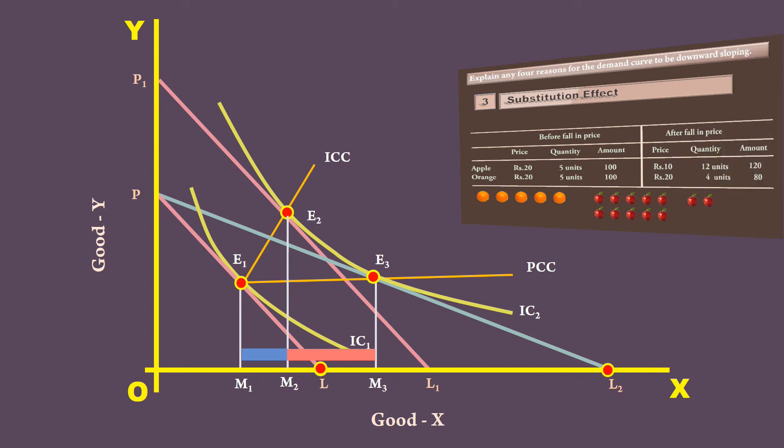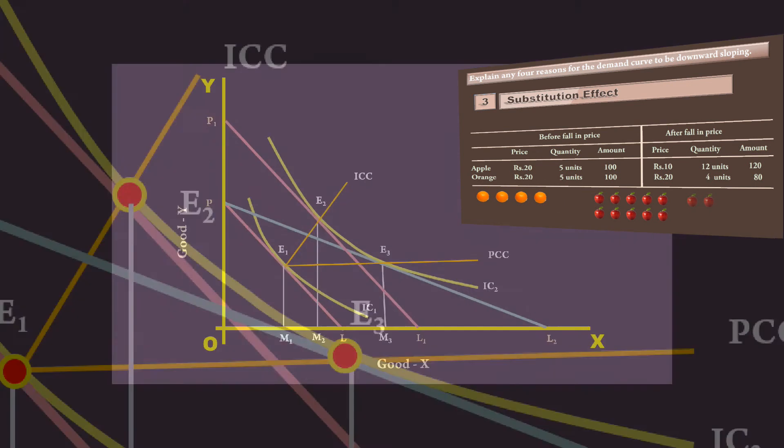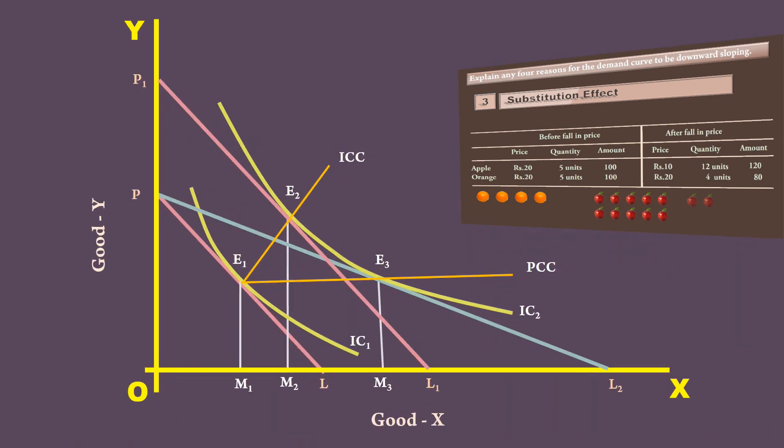If you want to understand income effect and substitution effect with a numerical example, watch my video on reasons for demand curve to slope downward. The link is given in the description.